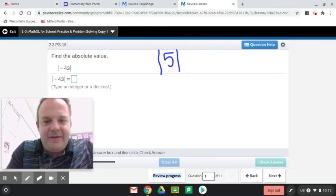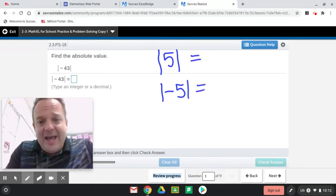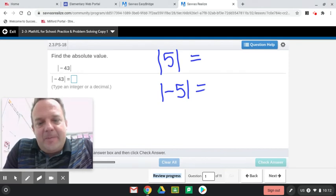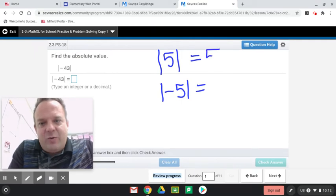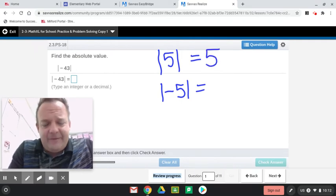Let's say the absolute value of 5, and then the absolute value of negative 5 we're going to do. Here we go. This is just to teach you about absolute value. Absolute value means the distance from zero. So, the absolute value of 5, 5 is how far away from zero?